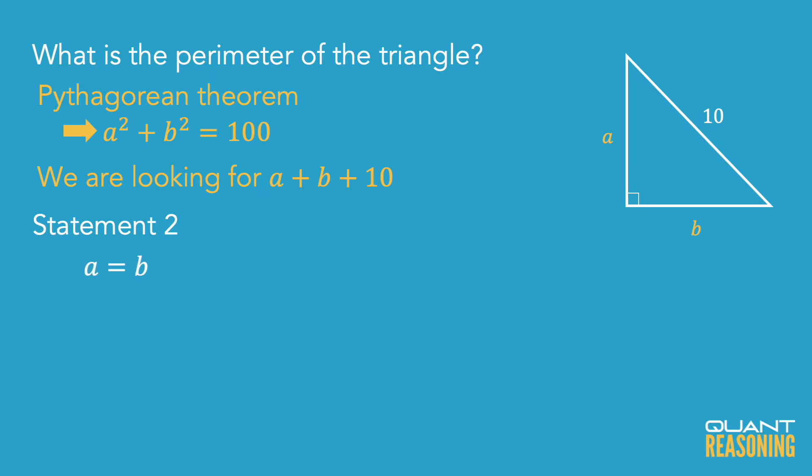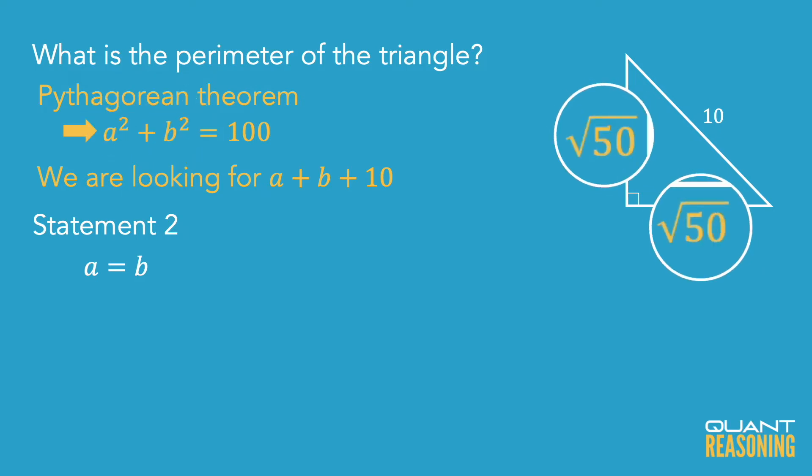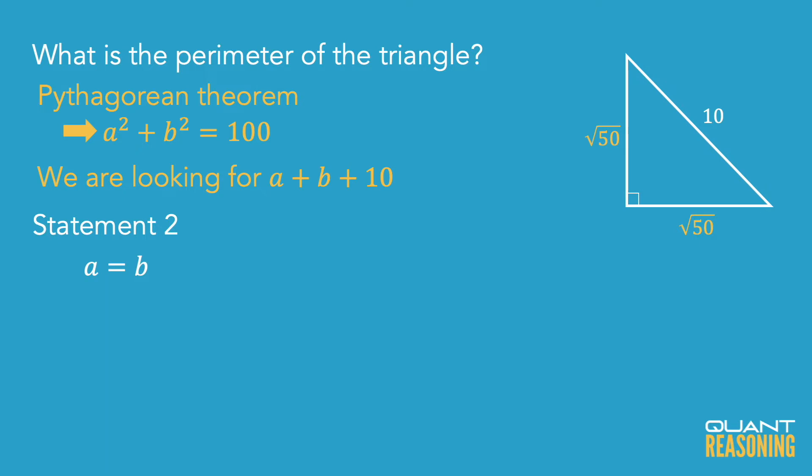Statement 2 tells us that the two sides are equal, which is even easier to evaluate. Since we know the sum of their squares is 100 and they're equal, each square on its own is 50. So each side is the square root of 50. I can find the actual values — root 50 and root 50 — and the perimeter would be 10 plus 2 times root 50.